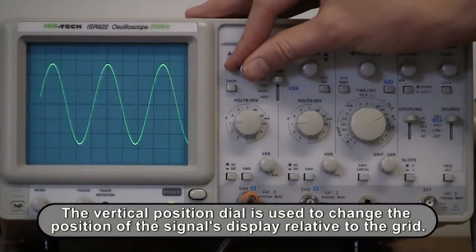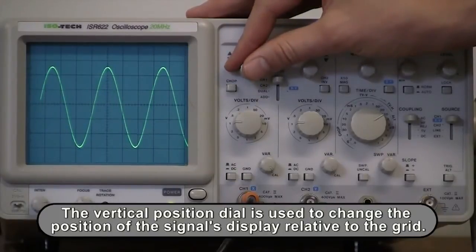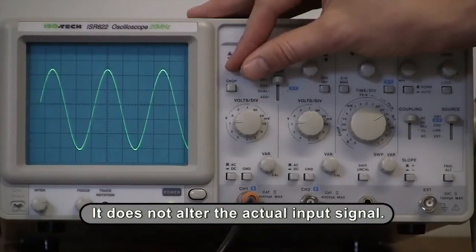The vertical position dial is used to change the position of the signal's display relative to the grid. It does not alter the actual input signal.